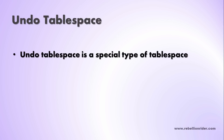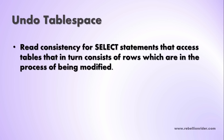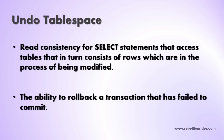Then there comes undo tablespace. Undo tablespace is a special type of tablespace used by Oracle Database to manage undo data if you are running your database in automatic undo management mode. Undo tablespace stores data permanently, meaning undo tablespaces are permanent in nature. Undo tablespace plays a vital role in providing read consistency for SELECT statements that access tables whose rows are in the process of being modified, and in the ability to roll back a transaction that has failed to commit.